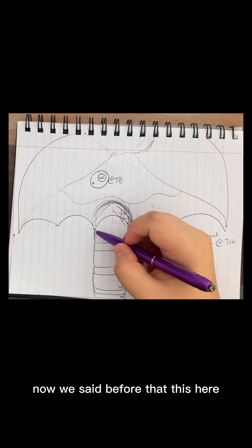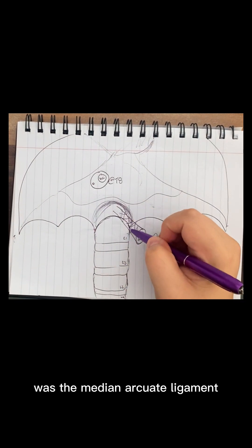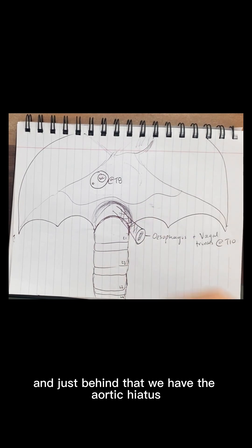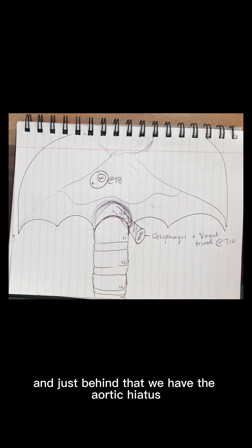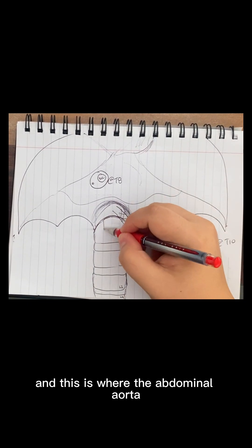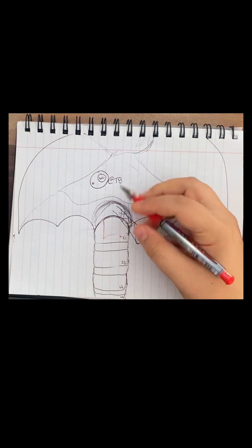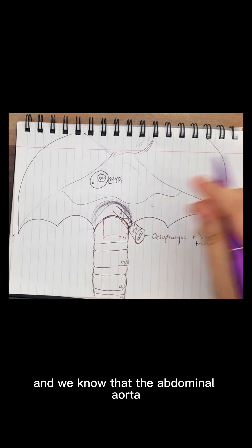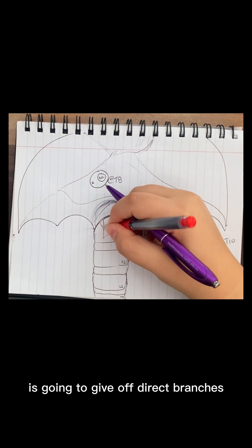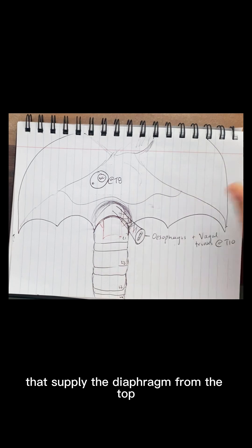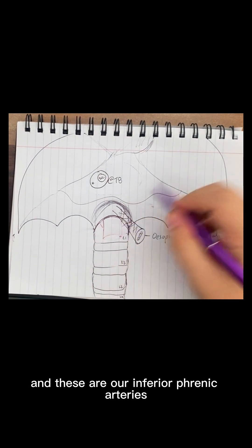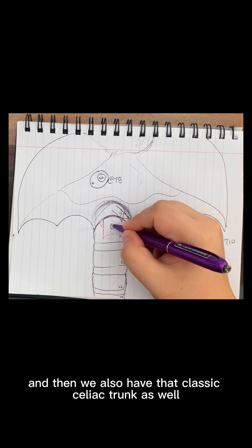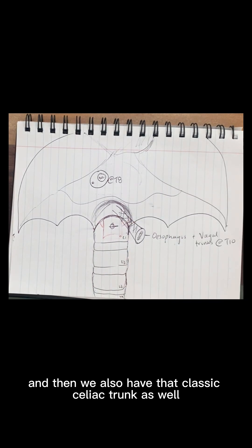Now we said before that this here was the median arcuate ligament. And just behind that we have the aortic hiatus. And this is where the abdominal aorta is going to emerge out of. And we know that the abdominal aorta is going to give off direct branches that supply the diaphragm from the top. And these are our inferior phrenic arteries. And then we also have that classic celiac trunk as well.